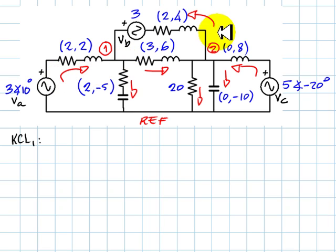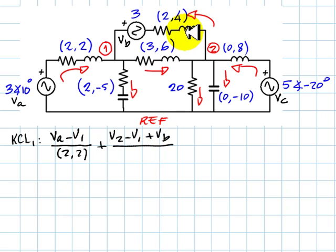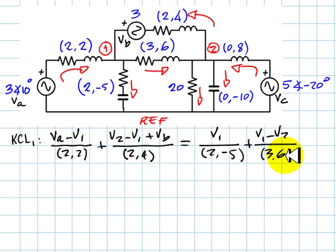Currents entering the node, there are two: this one and that one. Currents leaving the node, there are two as well. Four terms. This current is (Va - V1)/(2,2). Plus the current entering through this branch, that is (V2 - V1 + Vb)/(2,4). And that equals the currents leaving the branch. This current on the vertical branch is V1/(2,-5), plus this other current, which is (V1 - V2)/(3,6).